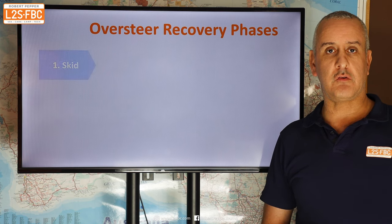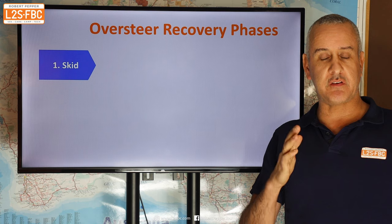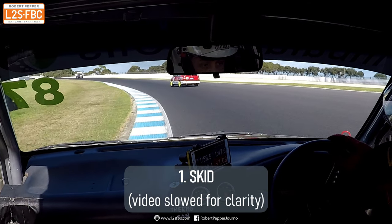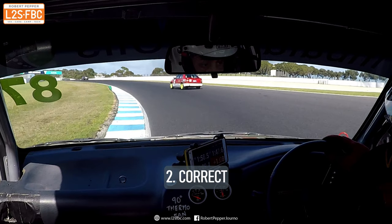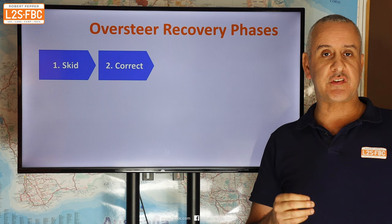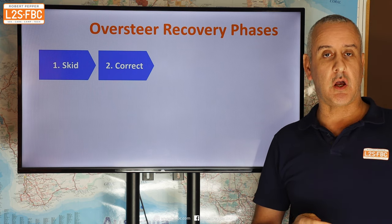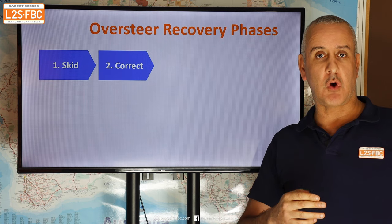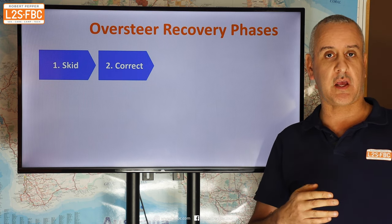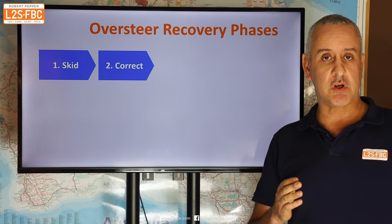There are four phases to oversteer recovery. The first is the skid, where the back end steps out — maybe just a little, or maybe a lot. As soon as it does, you have to put in a correction: steer where you want to go and look where you want to go, but also do the necessary with the pedals — which is often leaving them alone, or reducing braking if you've braked too much, reducing throttle if you've accelerated too much, or in a front-wheel-drive car, potentially using a bit of acceleration.